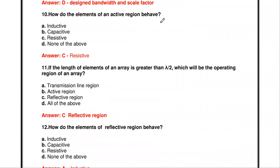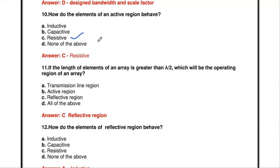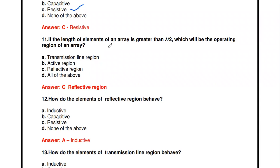The next question: how do the elements of an active region behave? In a log periodic dipole array, the array is divided into three regions: active region, transmission region, and reflective region — classified based on the size of the dipole elements. In the active region, which is the center region, the elements behave like resistors.